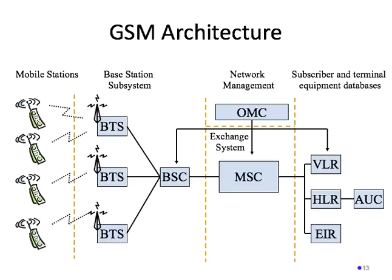Next, we see a picture of the high-level GSM architecture. There are a couple of different large-scale components. All the way at the left, we see the mobile stations, or MS — simply a fancy word for the mobile phones or mobile devices. These are connected over the radio interface to the base station subsystem, which is comprised of two different components: the BTS, or base transceiver station, and the base station controller, or BSC.